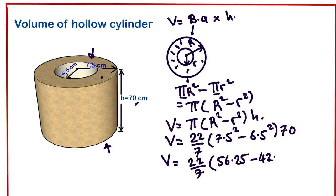Times 70. If we simplify this, we are going to have V equals 22/7. 56.25 minus 42.25 will give us 14.